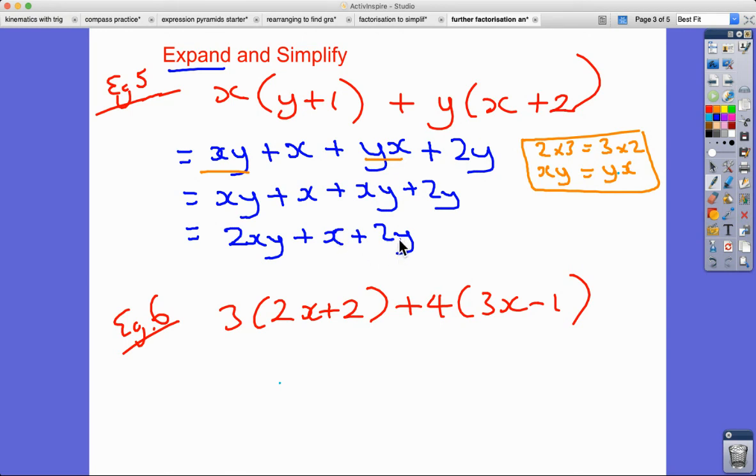So if I actually I could just turn it around to make it a bit clearer: XY plus X plus XY plus 2Y. And now I can start to gather up the like terms. I've got XY plus XY, so I've got 2XY. I've got plus X and I've got plus 2Y. These are unlike terms. This is an X term, this is a Y term, this is an XY term. So gathering up the like terms, that's as simple as I can get it.